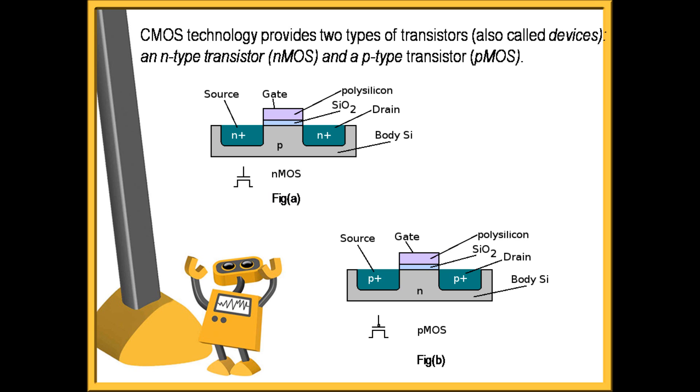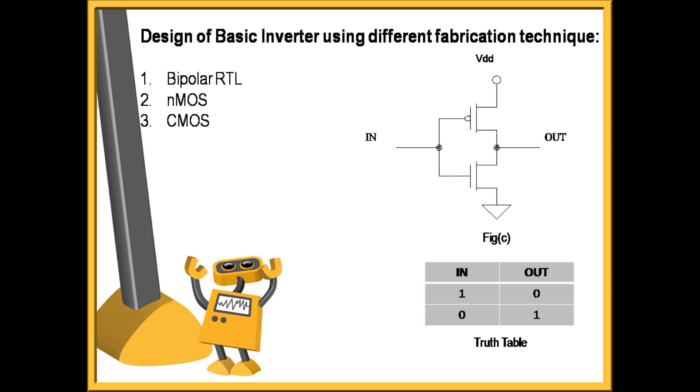Next is basic inverter designing using three technologies. The technologies which we can use for inverter design are: First is BJT-RTL, using a BJT transistor and a resistor, we can design an inverter. Next is NMOS technology and the last is CMOS technology. The basic operation of an inverter is to provide logic 0 for logic 1 input and logic 1 for logic 0 input. Amongst these three technologies, the fastest operation is performed by BJT. But the power dissipation is much higher, which is a major concern.